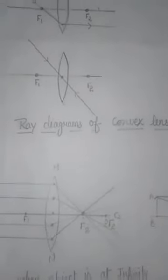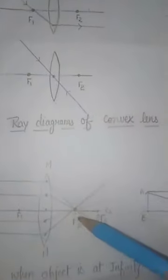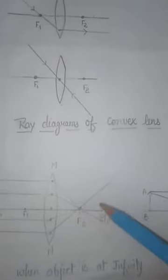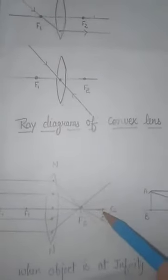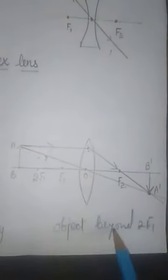The image is formed at f2. The image size is point-sized because all rays meet at that point, and the image is real and inverted.